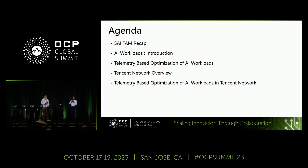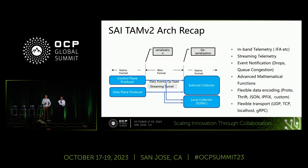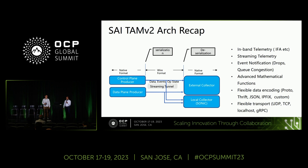We'll start with the connection to OCP. As you know, Switch Abstract Interface, SAI, is getting widely deployed, and Broadcom has made significant contributions, including telemetry. The specification we are working on with partners and the community is called the Telemetry and Monitoring, or TAM, specification. It has support for in-band telemetry, drop monitoring, and many other features that will play a significant role in monitoring and optimizing the network, especially for AI/ML workloads.